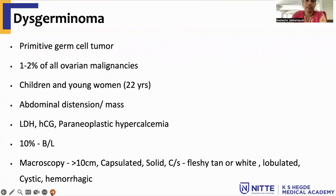Coming to dysgerminoma, it is a primitive germ cell tumor. The incidence is 1-2% of all ovarian malignancies. Commonly, it is seen in children and young women of about 22 years of age. They present with abdominal distension or mass. The serum markers for dysgerminoma are LDH and HCG, and they can also present with paraneoplastic hypercalcemia. Most cases are unilateral but 10% of patients can present with bilateral tumor.